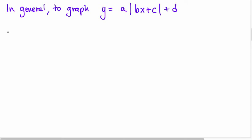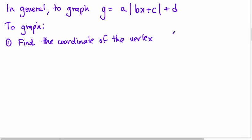Here's the steps to graphing it. First of all, you're going to find the coordinate of the vertex. That coordinate is always minus c over b comma d. The reason behind that is the vertex is the v-shaped point here, and it's going to happen when this inside piece is equal to zero. If you set that equal to zero and solve for x, you'll come up with this piece. And if this is equal to zero, this is your y value of your coordinate.